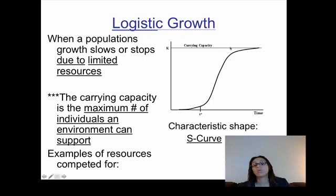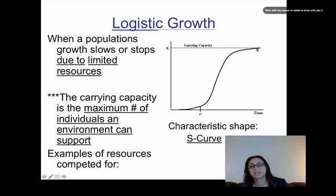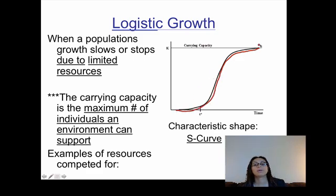The reason for hitting carrying capacity is that if you have more individuals, there aren't enough resources to keep them all alive — they run out of water, food, and space. Food, water, and space are the most common limited resources in an environment. Once the population hits that point, it can't grow much higher. The shape of this graph is what we call an S-curve. You can identify logistic growth on a graph by its S-shape.